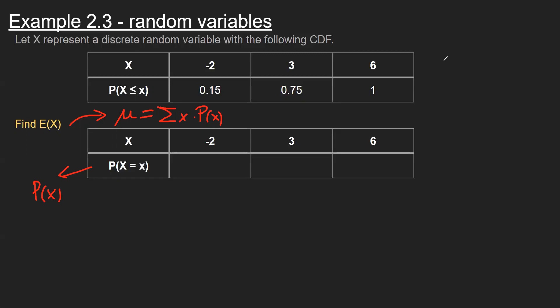For the first value, we saw earlier that because negative two is the smallest number, the chance that it's equal to negative two is the same as the chance that it's less than or equal to negative two. I have this immediately from the table. As it turns out, for discrete random variables, the smallest value that we have for x is going to be the same probability for PDF and CDF.